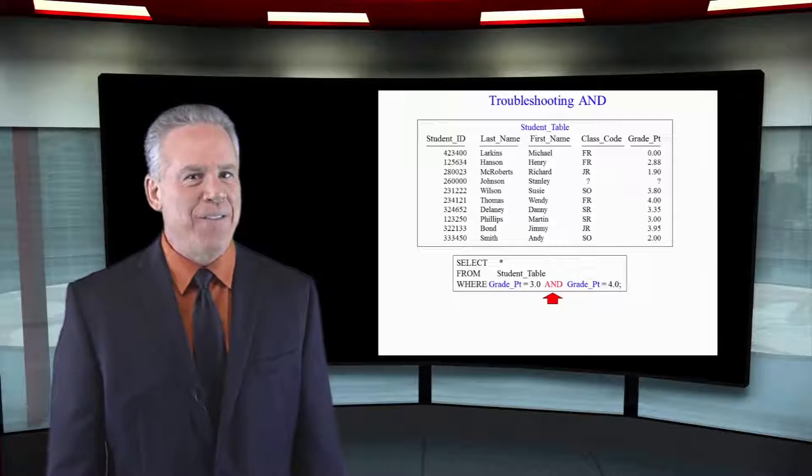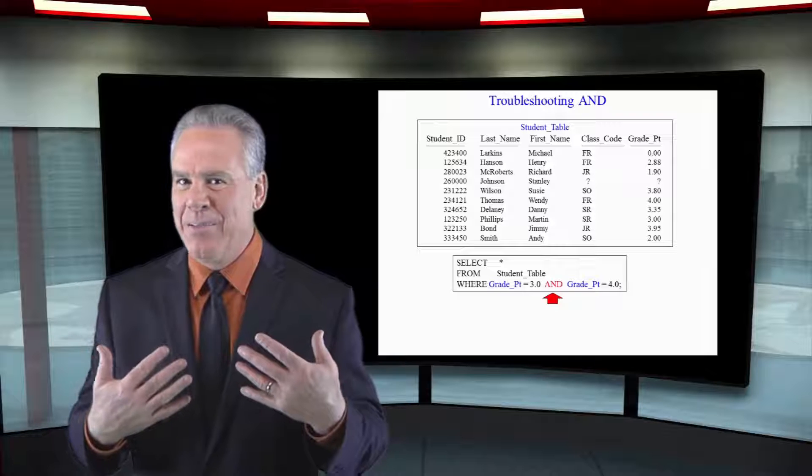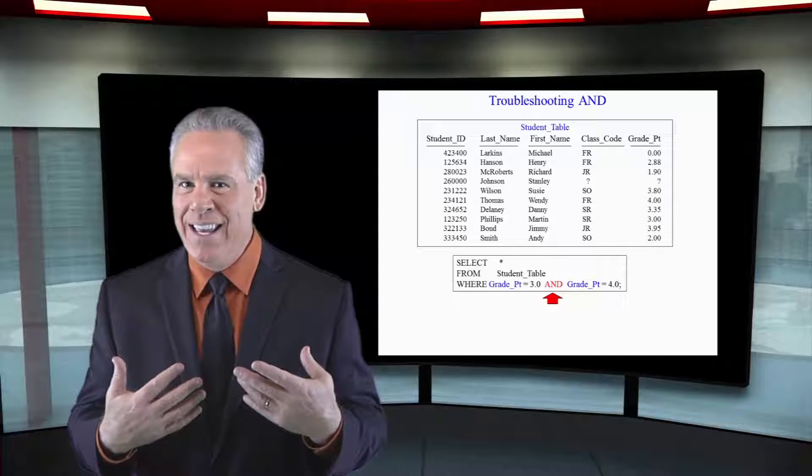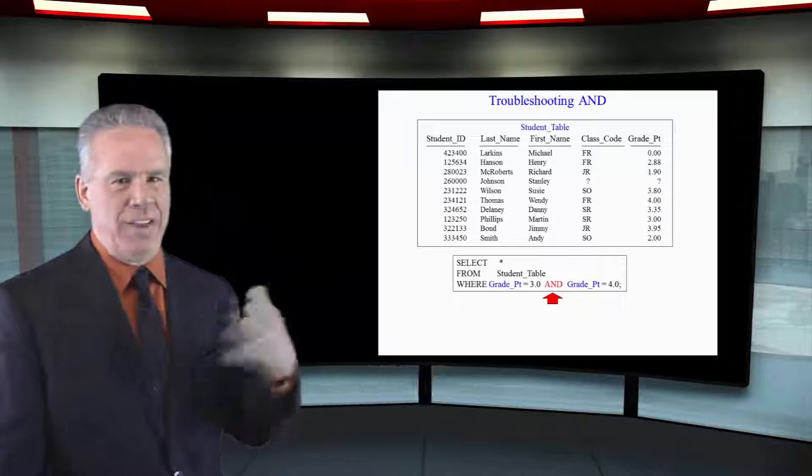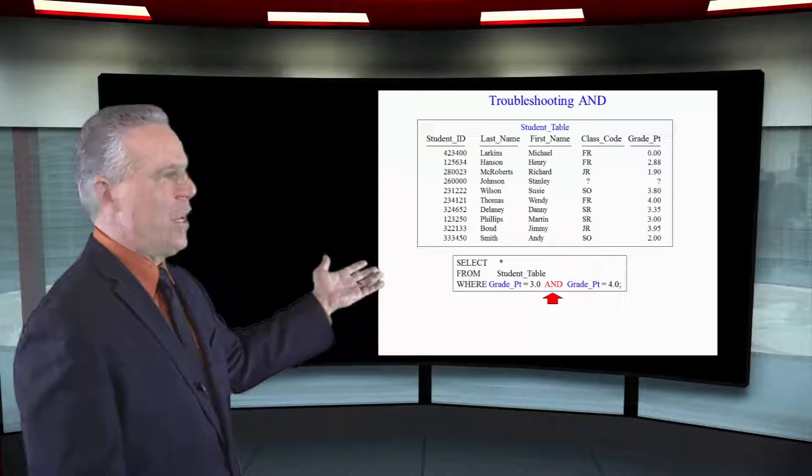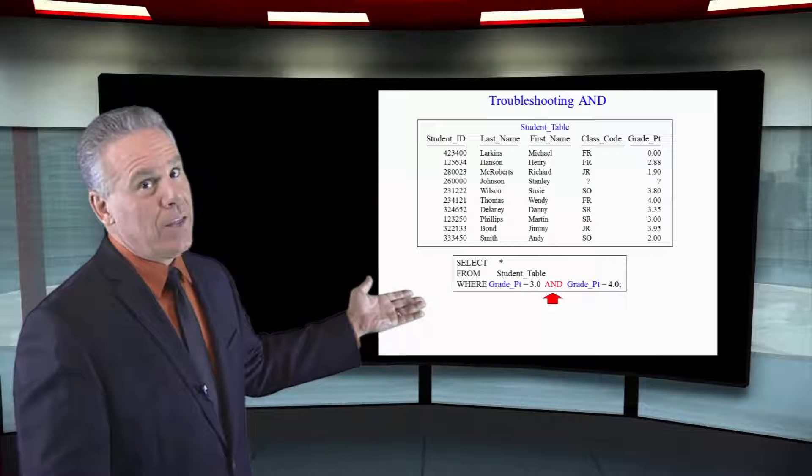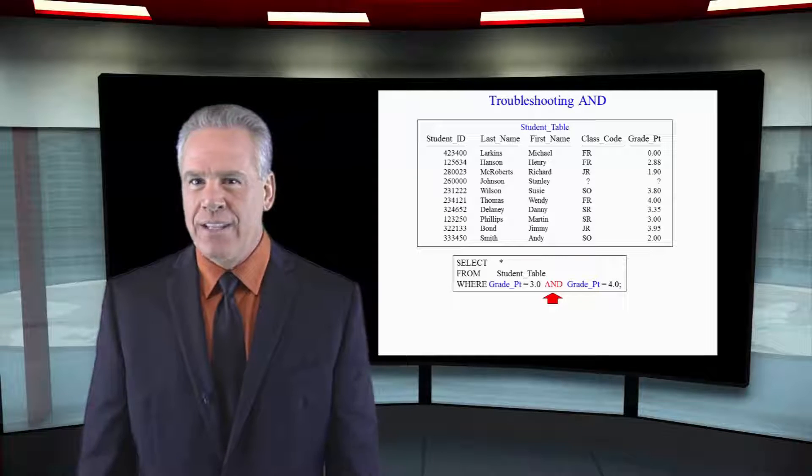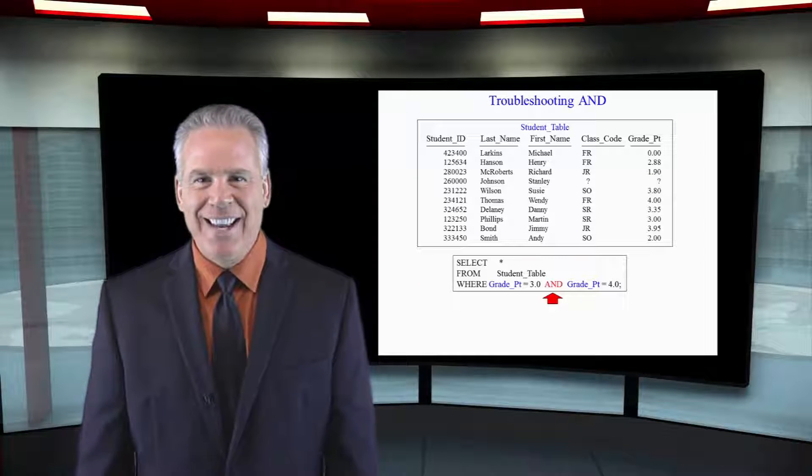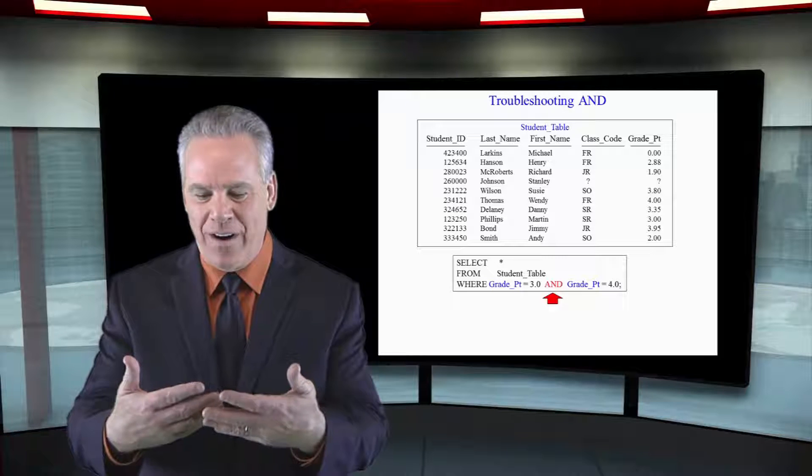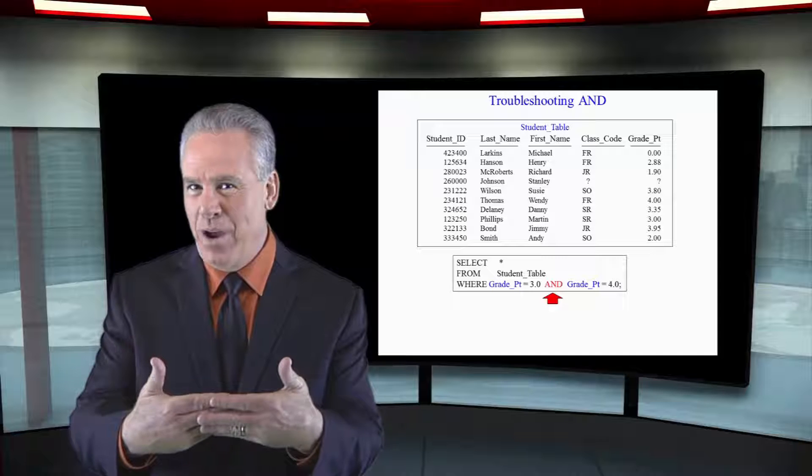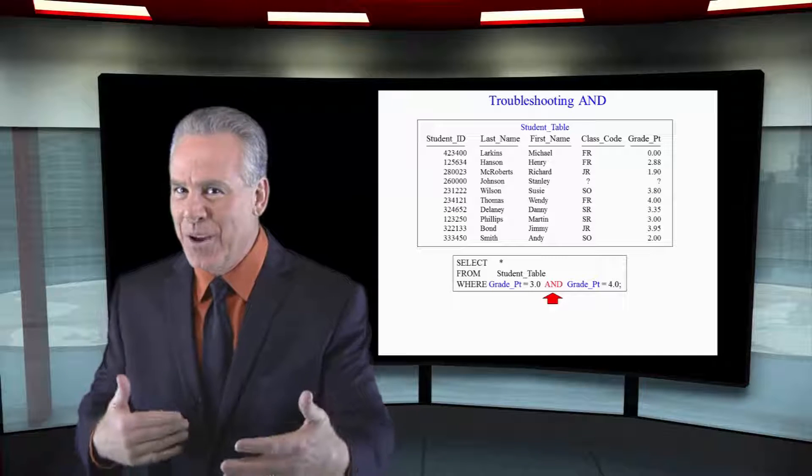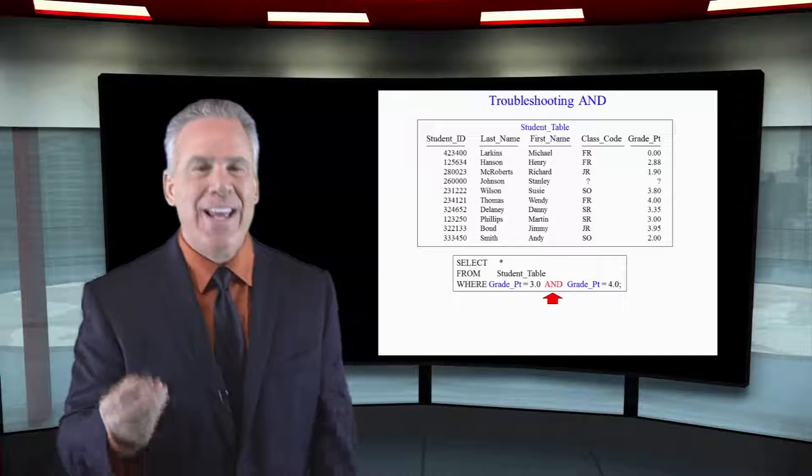Here's one of my favorite mistakes. I've made this a few times on the old programming table. And you slap yourself when you're done. Look at this. I want everything from the student table where the class code equals 3.0 and the class code equals 4.0. That's not possible. You see, when you come home with your report card and mom goes, what'd you get? You don't go, I got a 3.0 and a 4.0. Which one? You get a 3.0 or a 4.0.